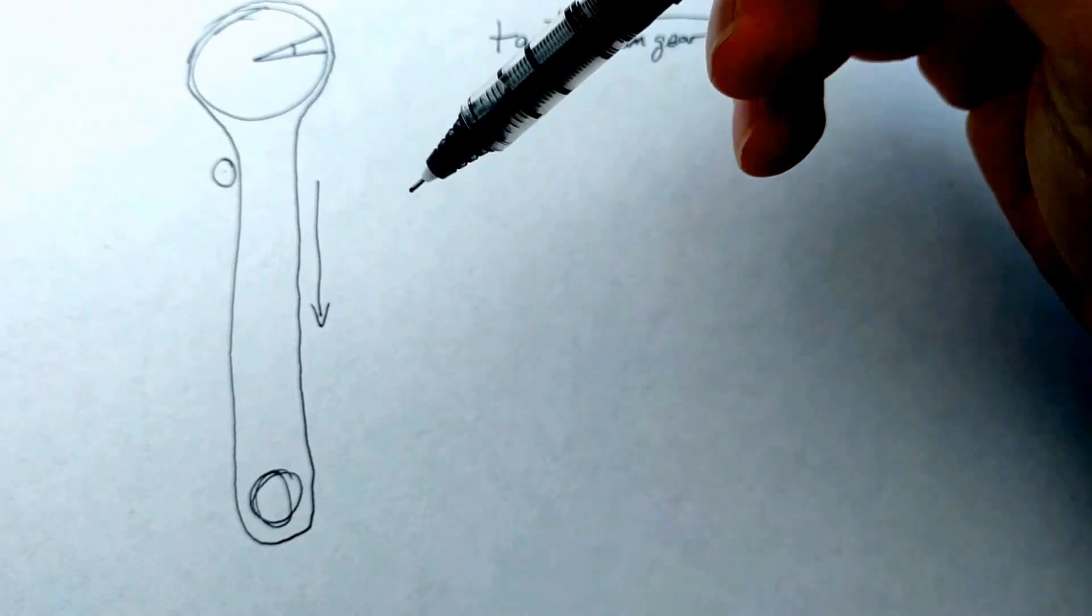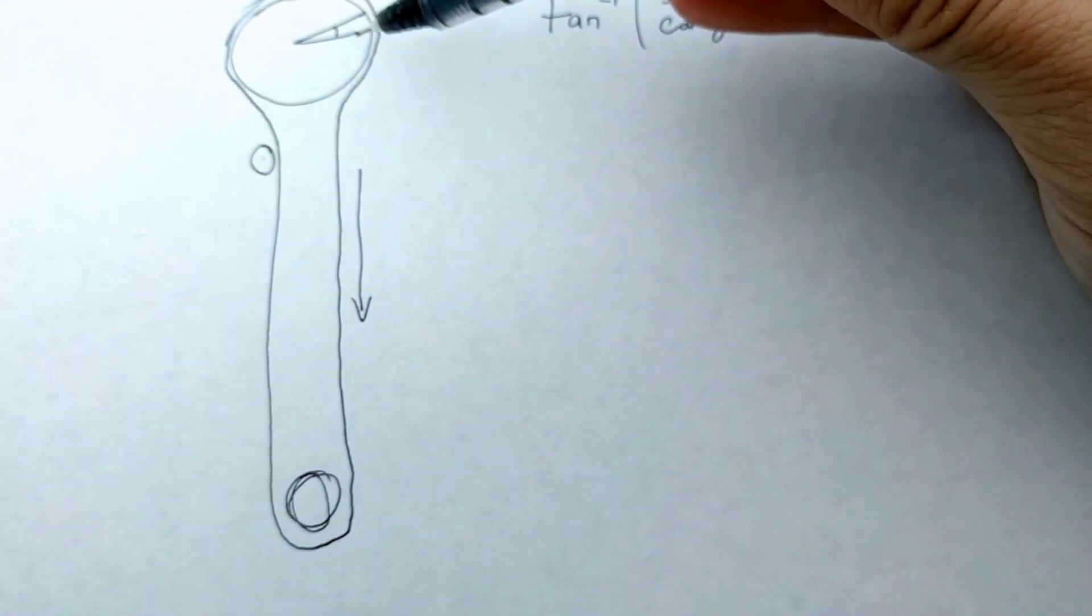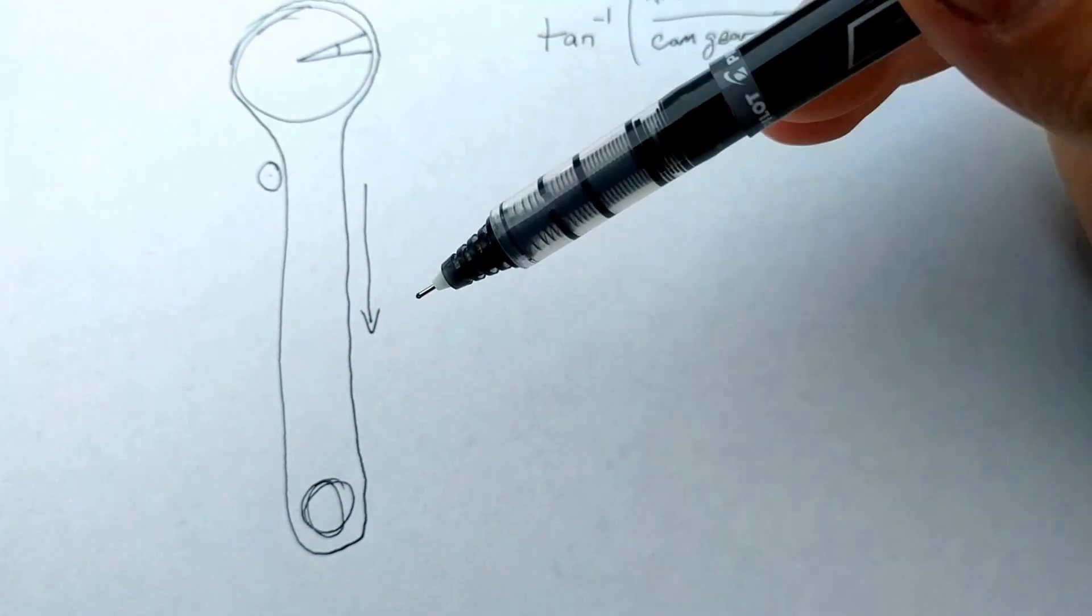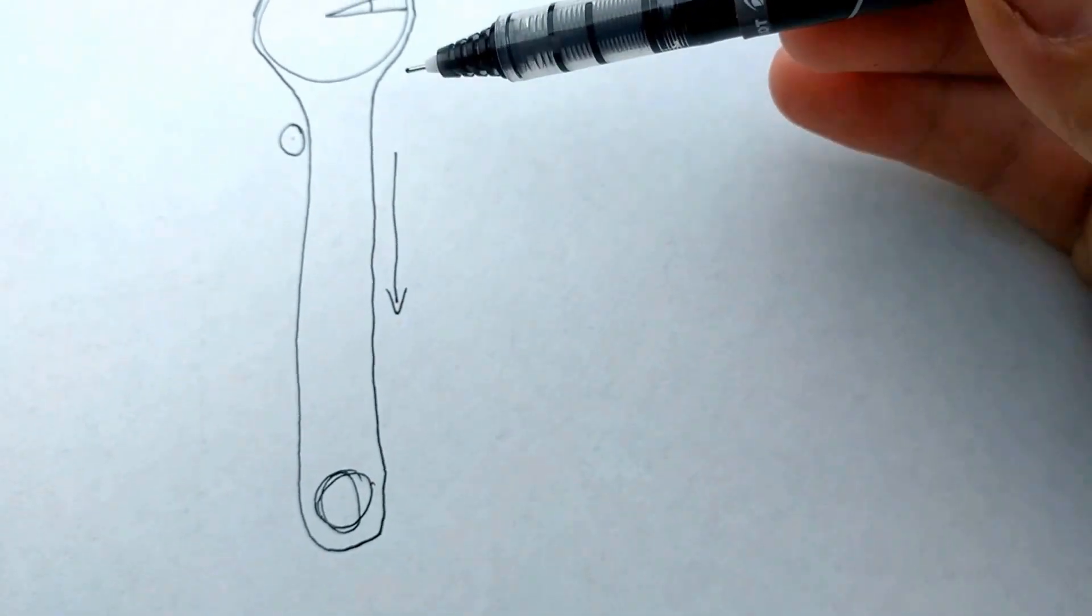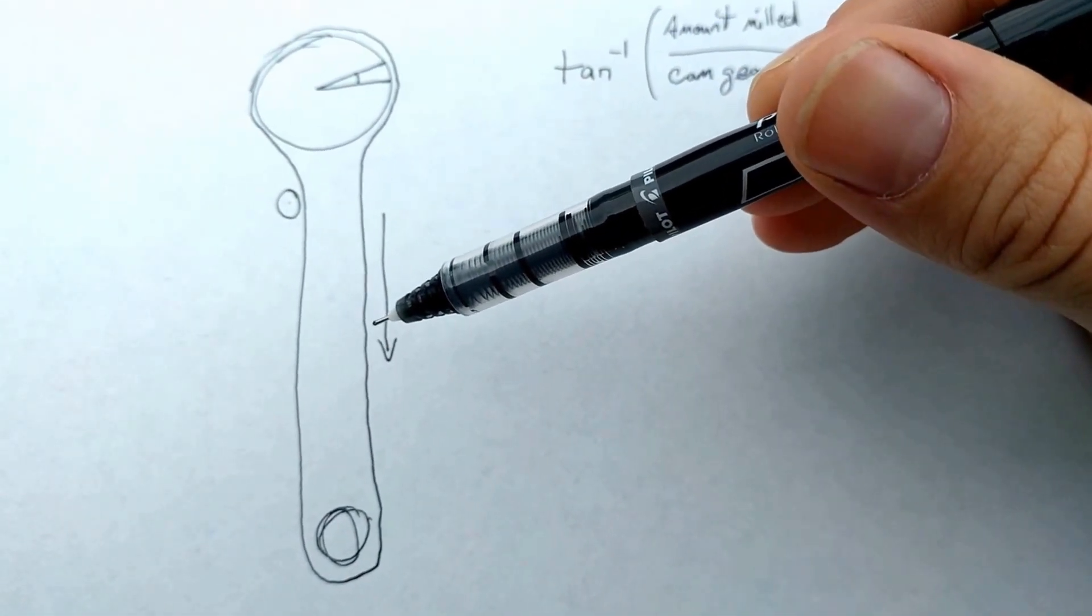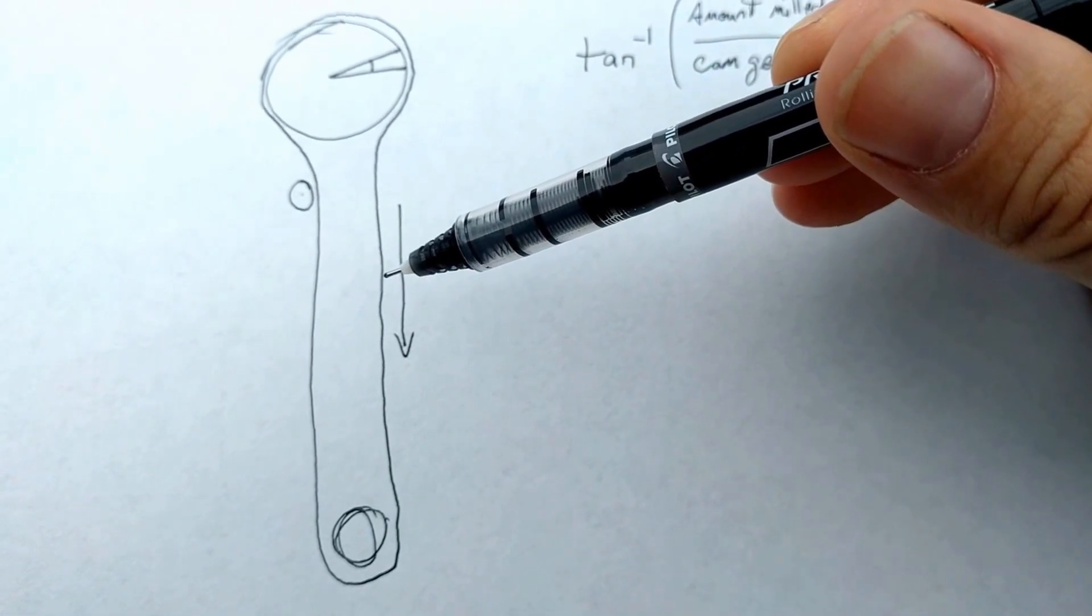When you remove material from the cylinder head, you're effectively shortening the distance between your camshaft and your crankshaft. So this applies to both timing belt and timing chain engines and dual overhead cam engines.